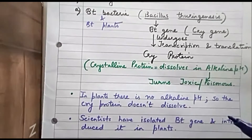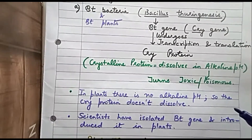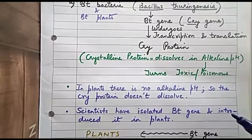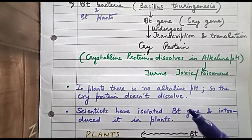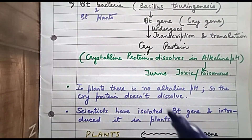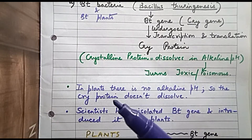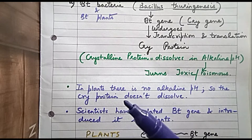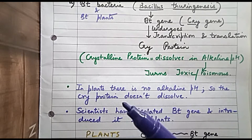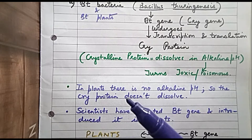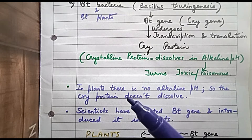Now we apply this condition to plants. Plants do not have an alkaline pH internally, which means that the cry protein will not dissolve inside a plant.